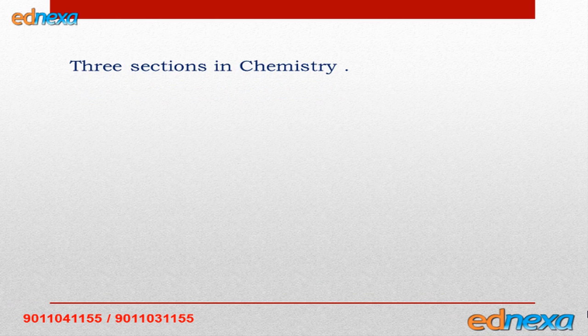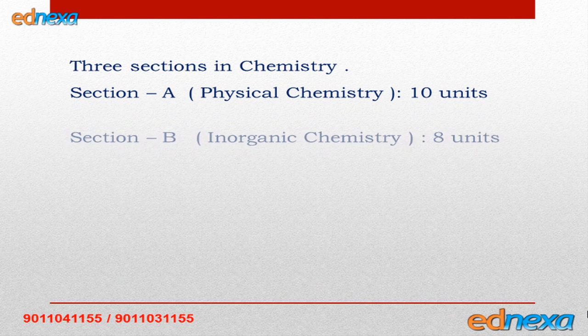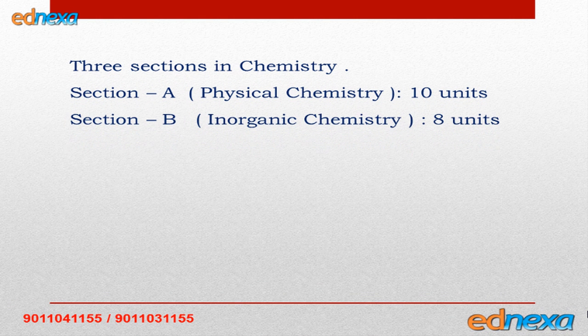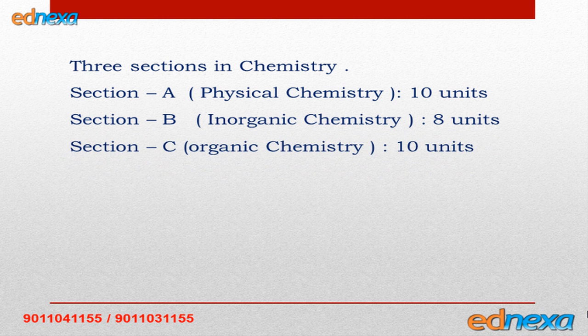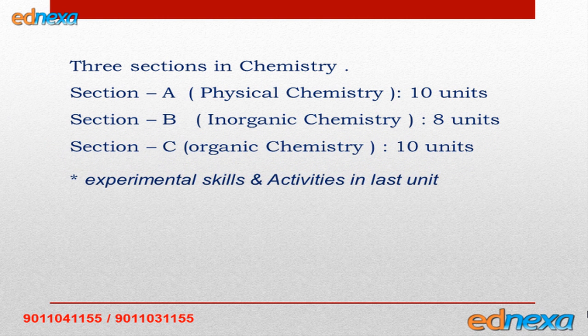Note that the number of units in physics and maths is comparatively less, but the syllabus for chemistry is vast. In chemistry the number of units is more. There are three sections: section A is physical chemistry with 10 units, section B is inorganic chemistry with 8 units, and section C is organic chemistry with 10 units. In the last unit, experimental skills and activities are given.